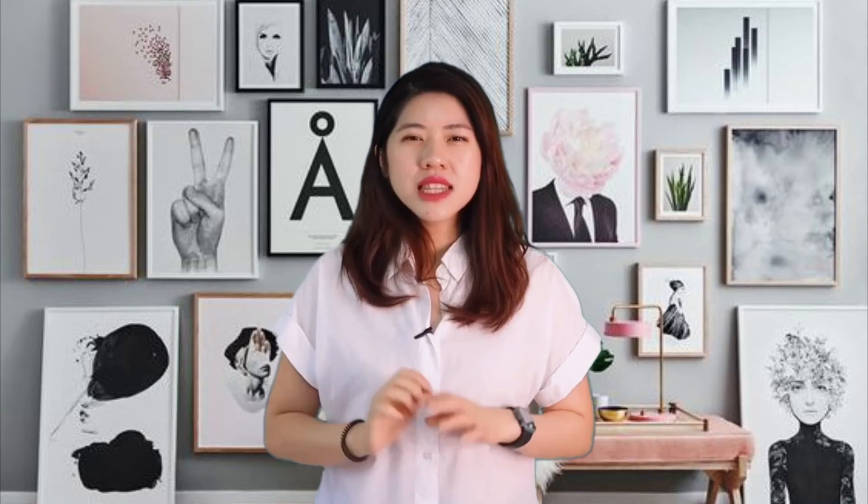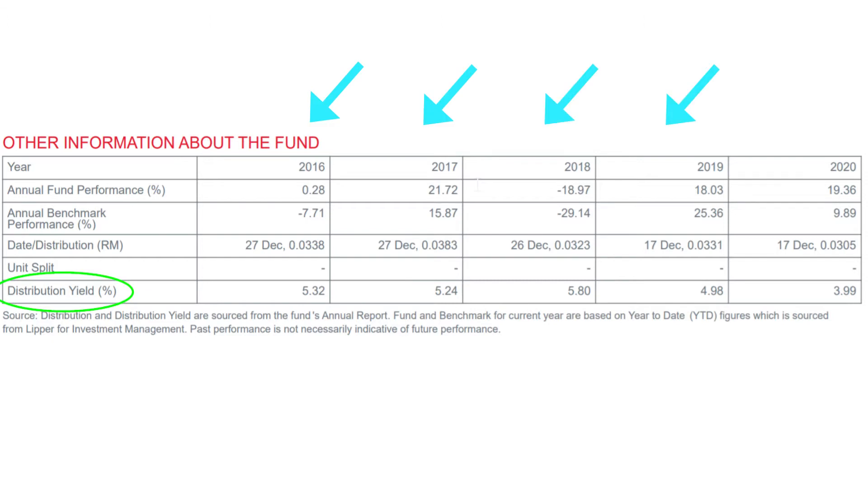Number 5: Dividend. This may not be a key factor for many people, but it is something I tend to look into in a fund fact sheet. If a fund has a regular dividend payout, it creates an impression of stability, and the return is not solely depending on its volatility. This is especially relevant for conservative investors who prefer a stable return with not much volatility to their capital invested.